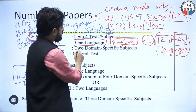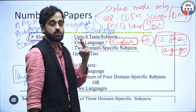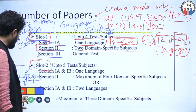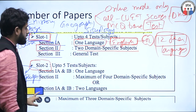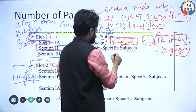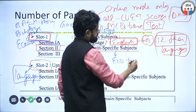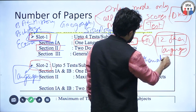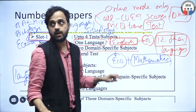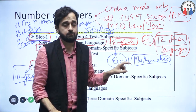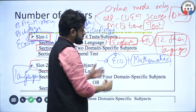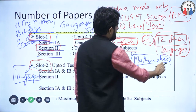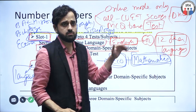In Section 2, you have to choose 2 domain specific subjects and give tests on them. For example, if you are applying for a BA program in economics, you have to give papers in economics and mathematics. Most colleges offering BA in economics have made this combination mandatory. You can check the specific combinations required from the college website you want to apply to.